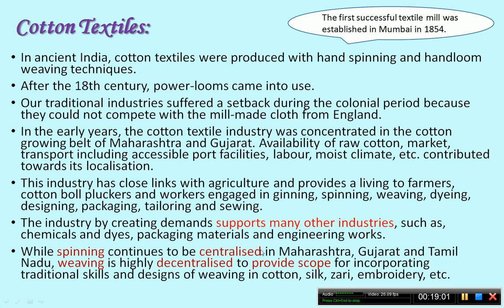While spinning continues to be centralized in Maharashtra, Gujarat, and Tamil Nadu, weaving is highly decentralized to provide scope for incorporating traditional silk and designs of weaving — cotton, silk, zari, embroidery. Weaving can be done all over the country, and the government has also supported the people, so weaving is spread across the country, using the traditional skills and designs of the people.